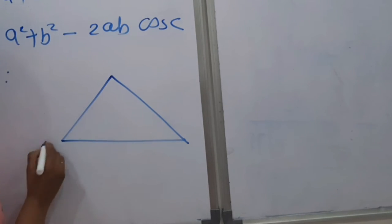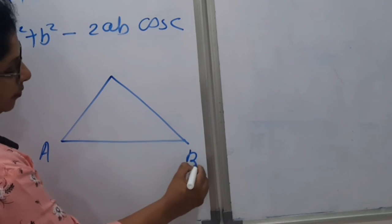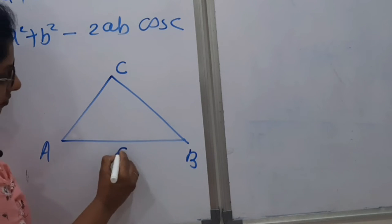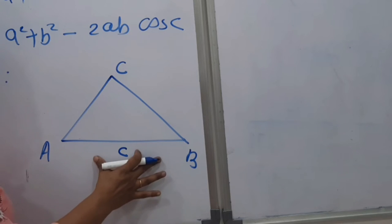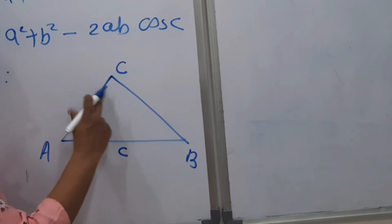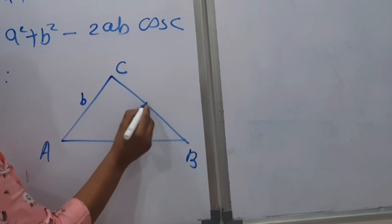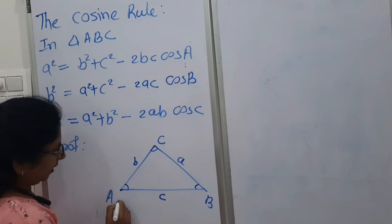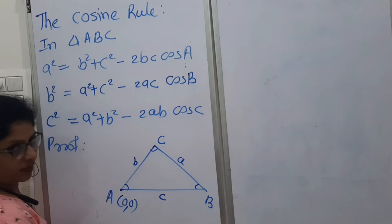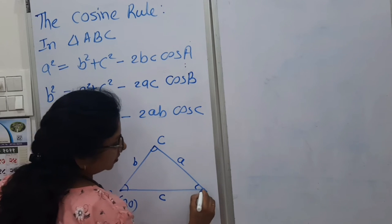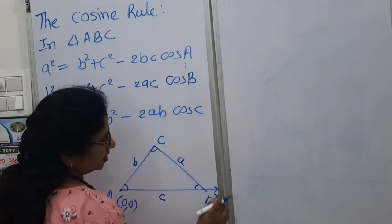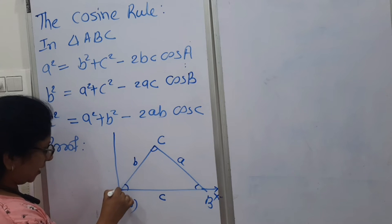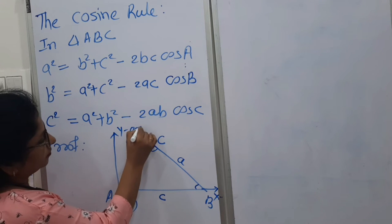This is a triangle. We will take vertex A here, B and C. The length AB is considered as C, the length AC is B, and the length BC is A. For the proof of the cosine rule, we will take A as the origin, and the x-axis along side AB. We will draw a perpendicular at A to the x-axis, and that will be our y-axis.